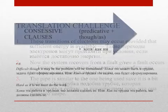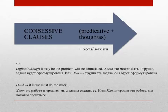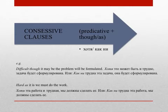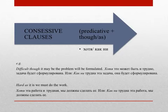Concessive clauses also require inversion, normally with the structure of an inverted predicative using 'though' in post-position. The translation recommendation is to use 'хотя' or 'как ни.' For example: 'Difficult though it may be, the problem will be formulated' — 'хотя могло быть и трудно, задача будет сформулирована' or 'как ни трудна эта задача, она будет сформулирована.' 'Hard as it is, we must do the work' — 'хотя эта работа и трудна, мы должны её сделать' or 'как ни трудна эта работа, мы должны её сделать.'